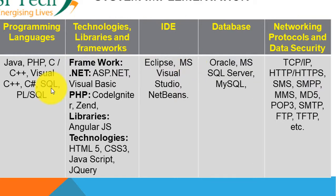These four columns — programming language, technology/library, IDE, and database — are a very important part of your project documentation. Select your programming language, select the technology library, select your IDE and databases, and write a few paragraphs about what you have selected and why. You don't have to write pages and pages; just a few paragraphs about the framework, technology, database, IDE, networking protocols, and data security.